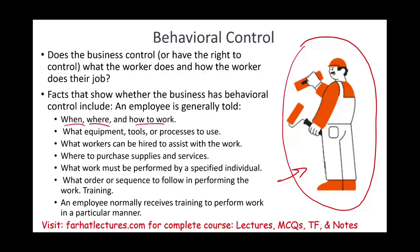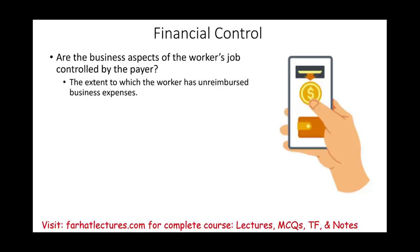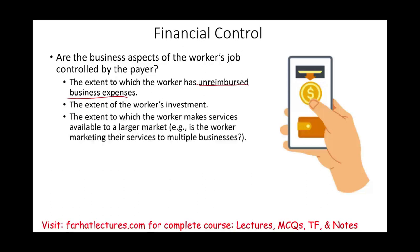When the IRS looks at behavioral control, they evaluate and weigh everything. Then they look at financial control — how are you being paid, and what is the extent to which the worker has unreimbursed business expenses? If you reimburse them for business expenses, they're more like an employee. If you give them a set amount and they pay their own expenses, they're an independent contractor. Also, if they've invested in their own truck or equipment, they're invested in their work.